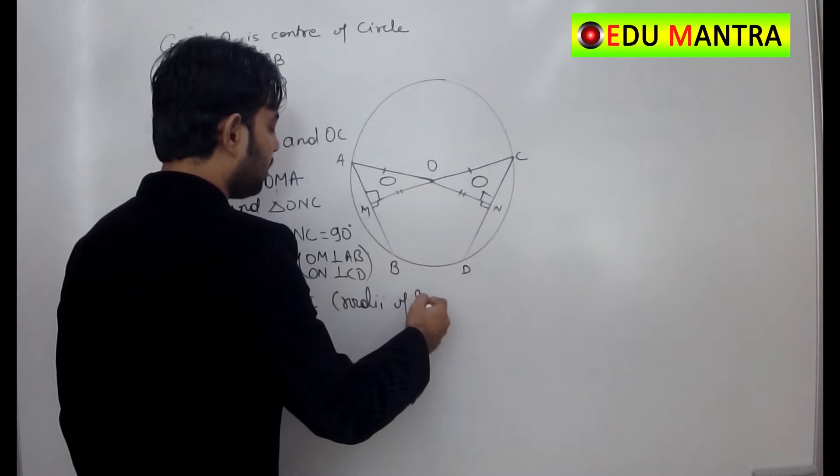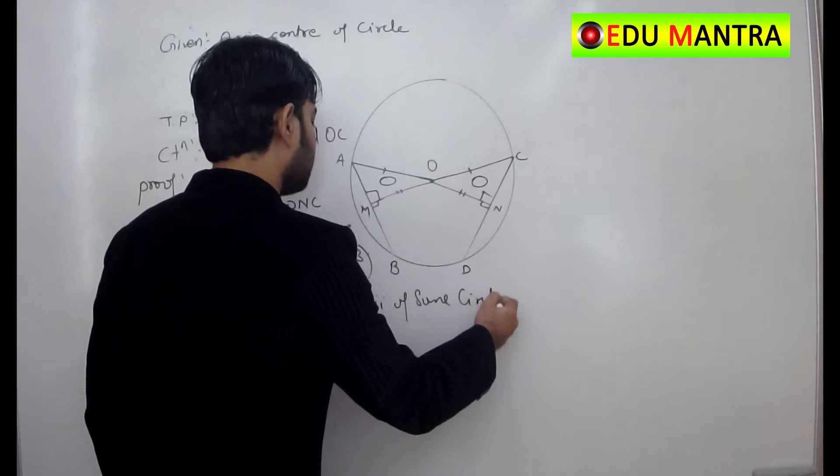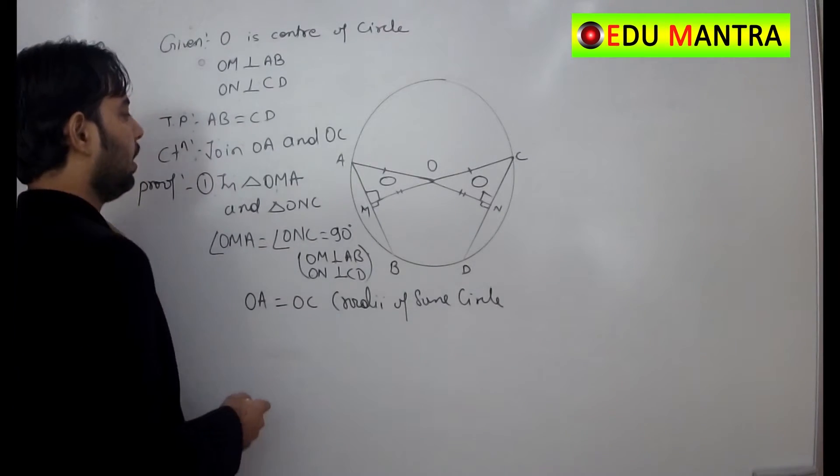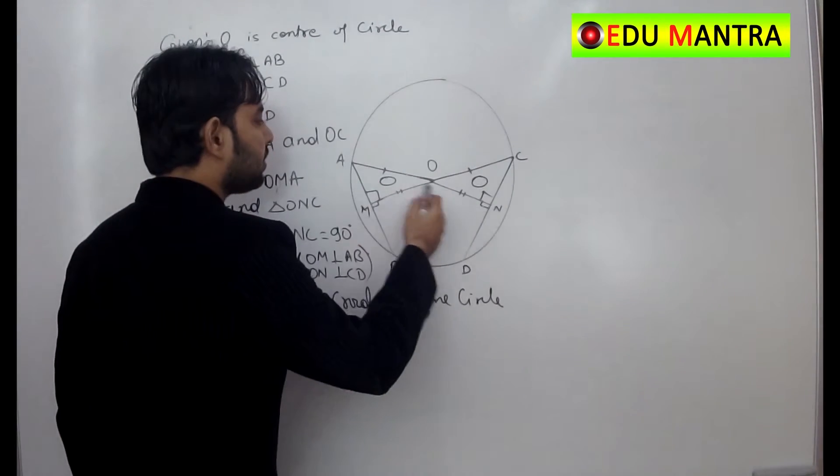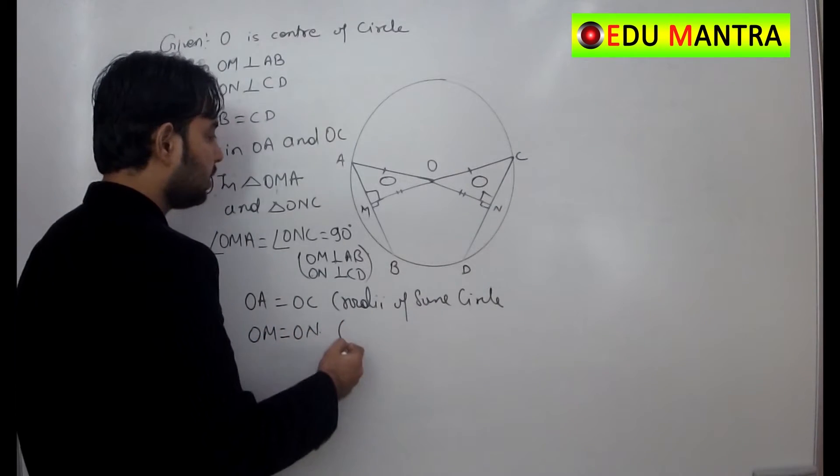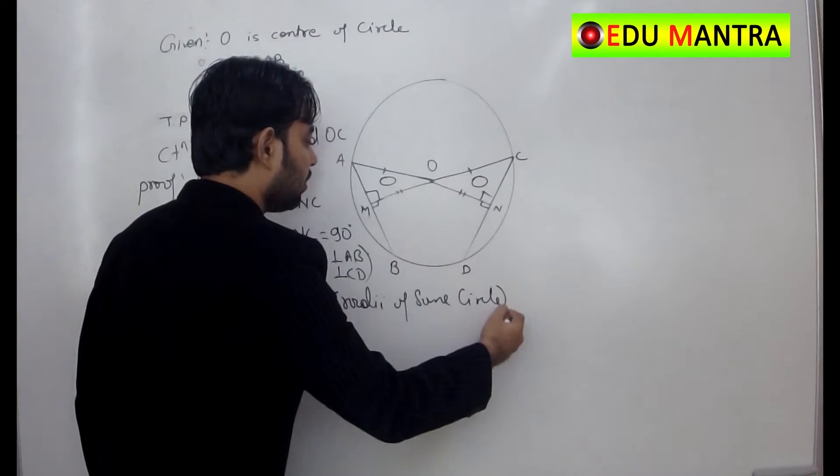OA is equal to OC, radii of same circle. And then OM is equal to ON. Given.